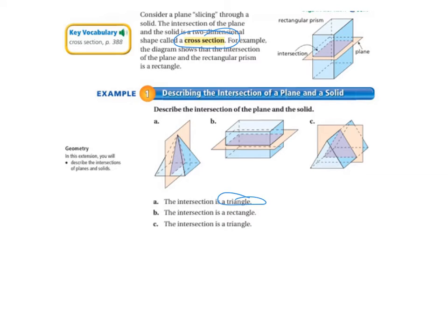And then letter B is another rectangular prism. And so the intersection of the third shape is going to be a triangle. That's a triangular prism.